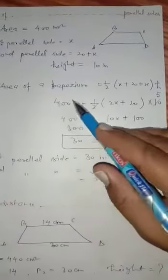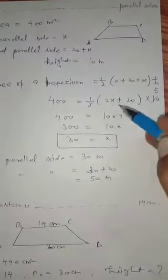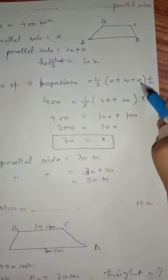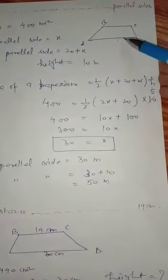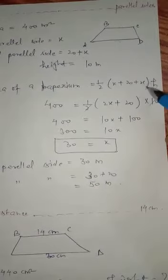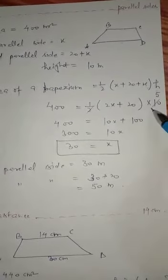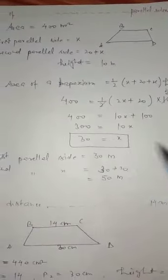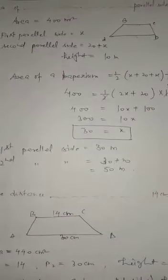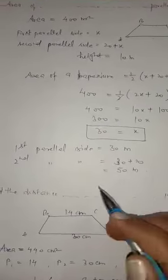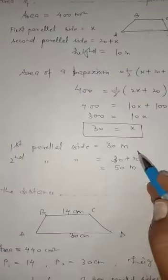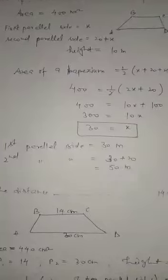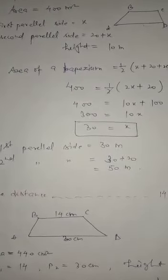Area 400 equals one-half times (x plus 20 plus x) times 10. After calculating, x equals 30 meters. So the first parallel side equals 30 meters and the second is 30 plus 20 equals 50 meters.